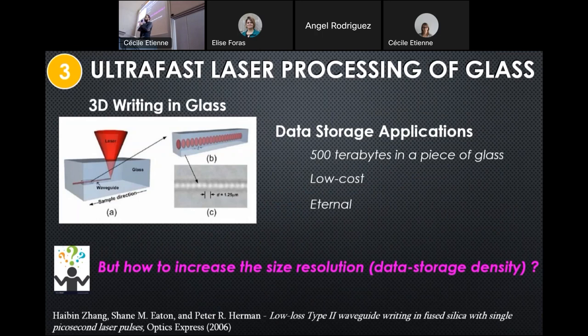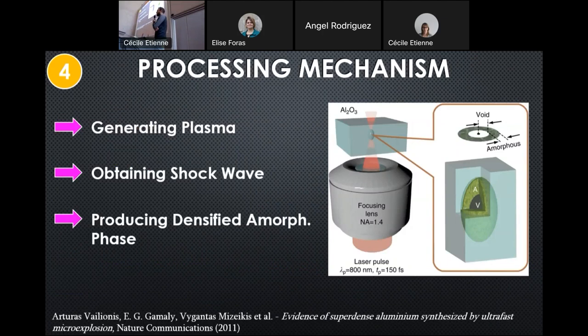Why is glass a good material for data storage? Because we can store up to 500 terabytes in a little piece of glass. It is low cost and it is eternal. But how to increase the size resolution, which means how to increase the data storage density?